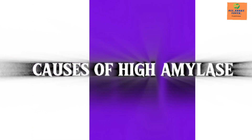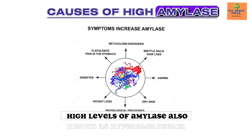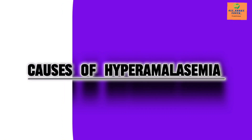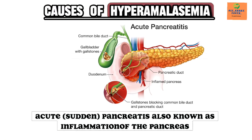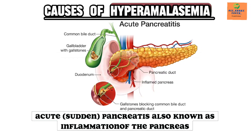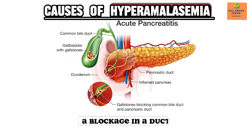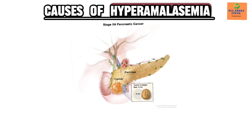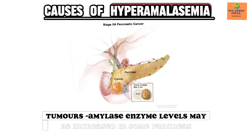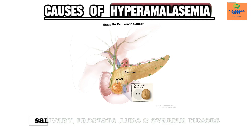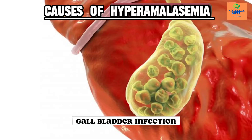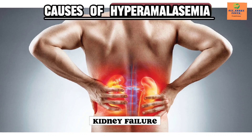Causes of high amylase, also known as hyperamylasemia: causes include acute pancreatitis, which is inflammation of the pancreas; a blockage in a duct in the pancreas; pancreatic cancer or benign tumors. Amylase enzyme levels may also be increased in some pancreas, salivary, prostate, lung, and ovarian tumors, as well as gallbladder infection and kidney failure.